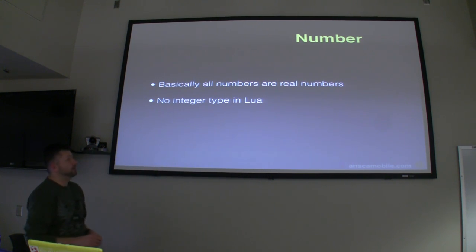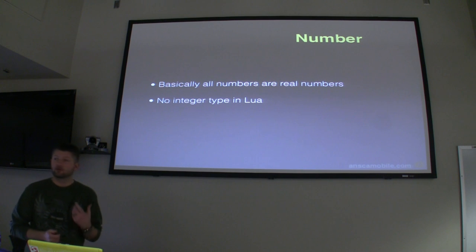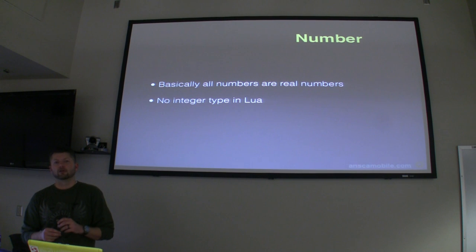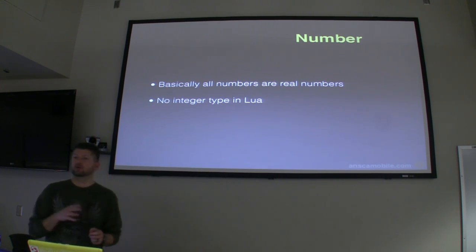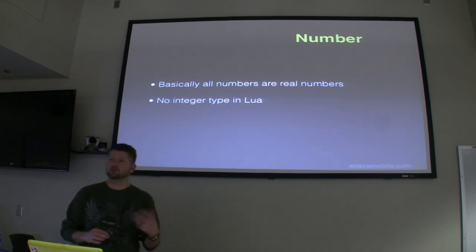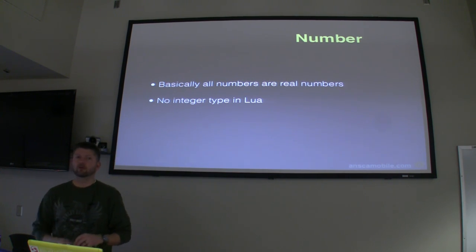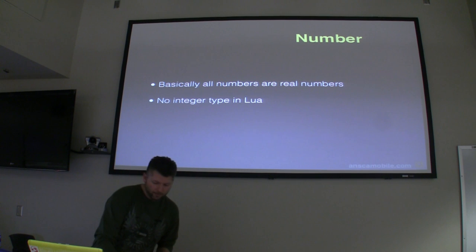The number type: basically they're all real numbers in Lua — there's no integer. You can pull down the source code and compile it to your own int, but they're all double-precision floating-point values. You can hold a solid integer value up to about 2 to the 54th power — basically think of a 64-bit integer and it will work perfectly. If you get above that, you may need to do your own build of Lua to support something greater.